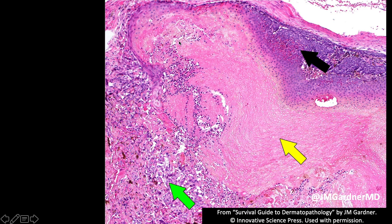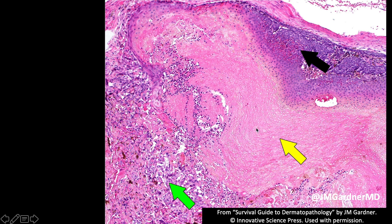Mitoses are often abundant in pilomatrichoma and do not worry me for malignancy unless there is severe nuclear atypia or atypical mitotic figures. The amounts of the three components — basaloid cells, ghost cells, and giant cell reaction — can vary widely. Sometimes abundant blue basaloid cells dominate and scare people. Other cases are just ghost shadow cells with giant cell reaction, calcification, or even ossification, with no basaloid cells at all. These are more common in children but can occur in elderly adults as well.